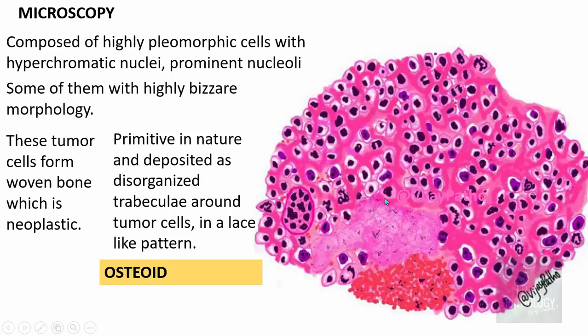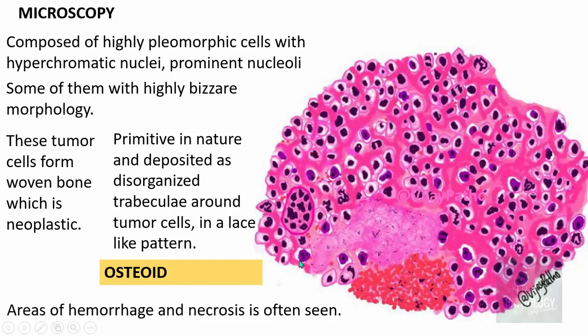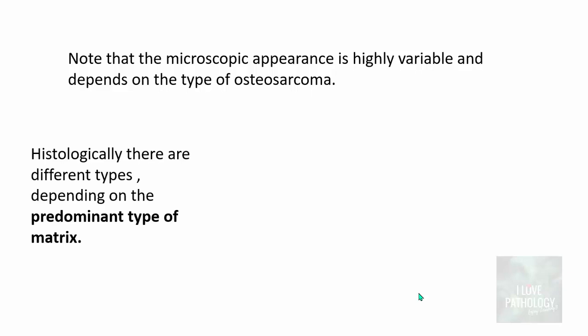Without identification of osteoid, you cannot diagnose osteosarcoma. There are also giant tumor cells, and areas of hemorrhage and necrosis can be found because it is a highly malignant tumor. Depending upon the type of osteosarcoma, the microscopic features vary considerably.